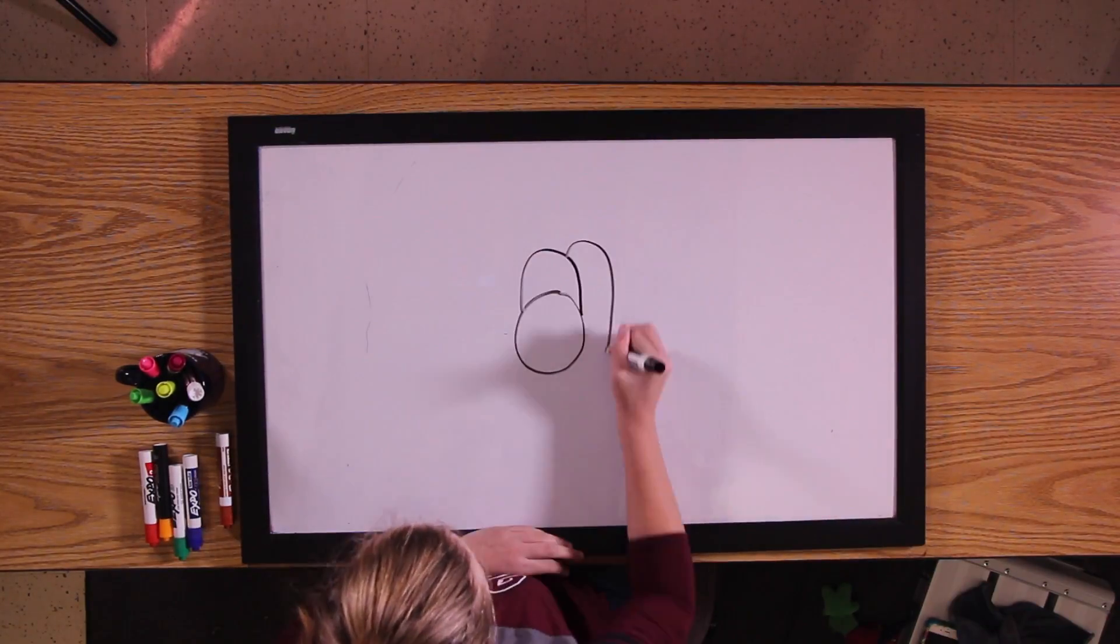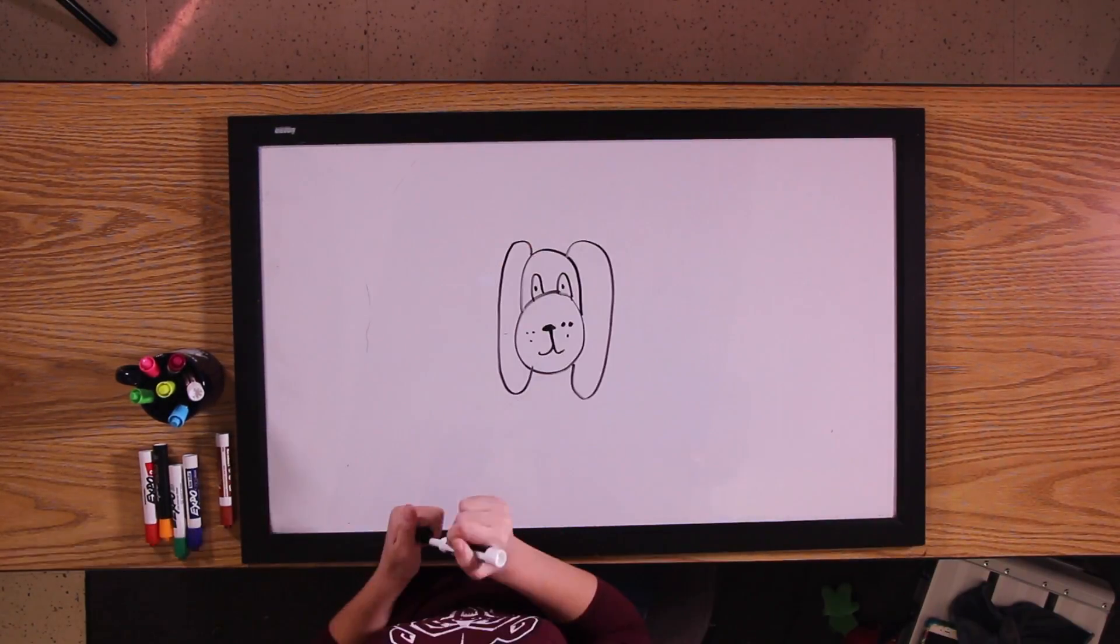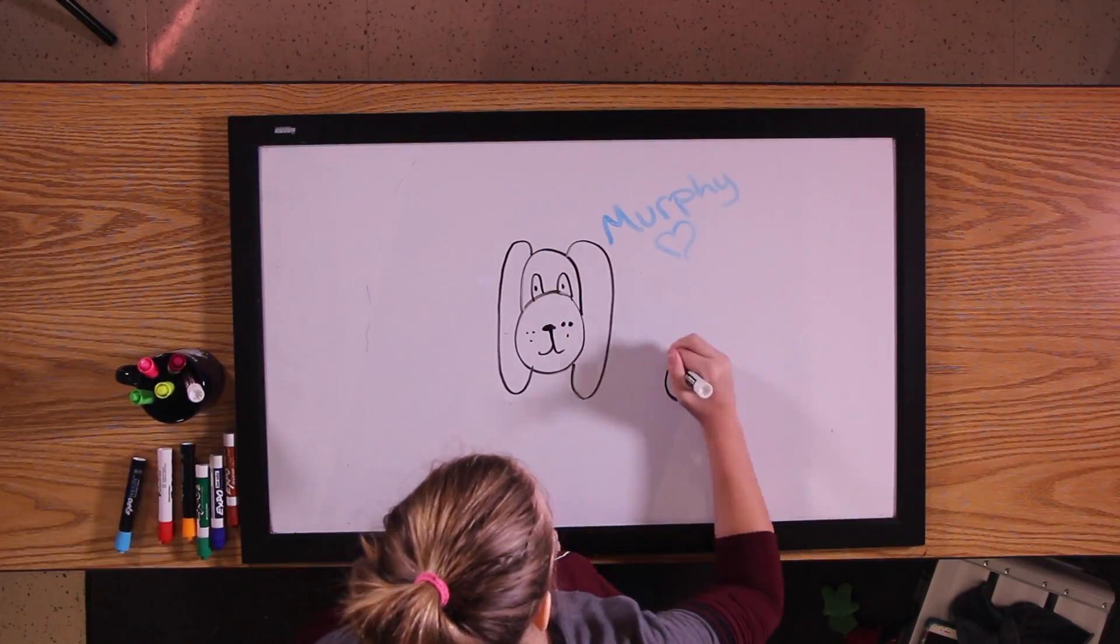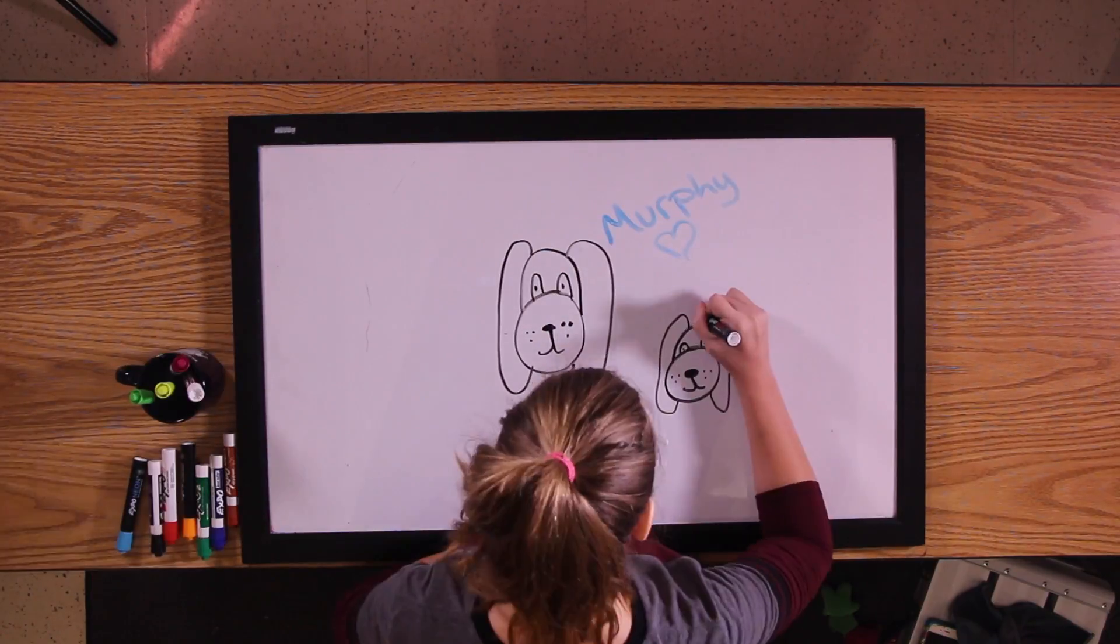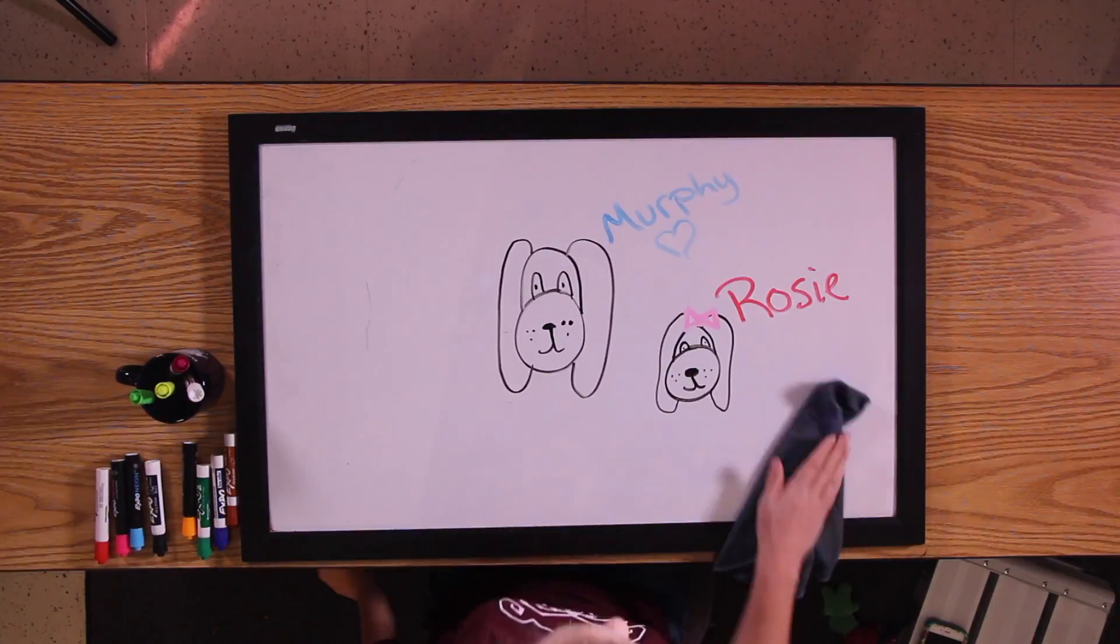My family consists of my mom and I, my grandparents, my aunt and uncle, and their three boys. My dogs are Murphy and Rosie.